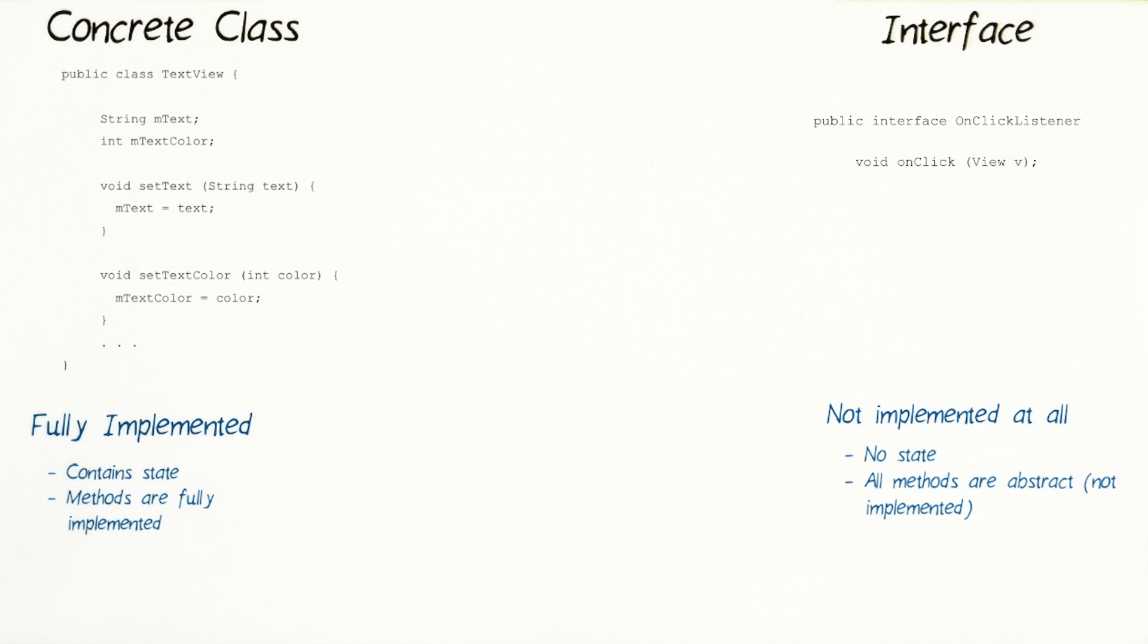This means it's an abstract method. An abstract method's implementation is intentionally left blank so that a developer like you, who wants to use the interface, can provide their own specific instructions for it. So it's like saying, fill in the blank for what you want to happen when this view is clicked on.